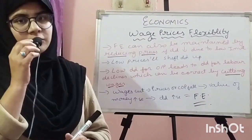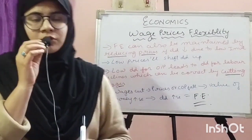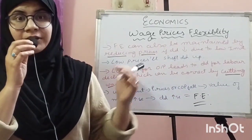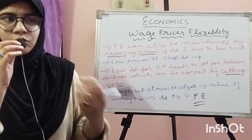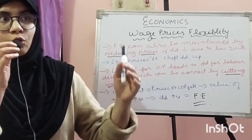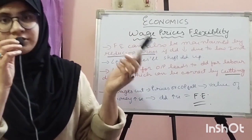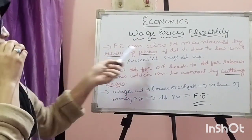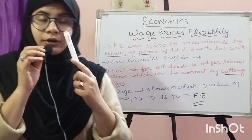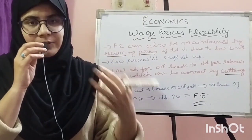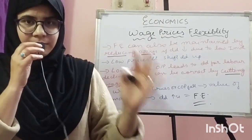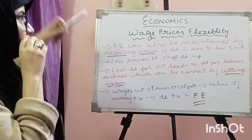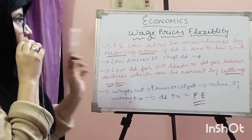Our next classical theory of employment is Wage-Price Flexibility. In the case of Say's Law, whatever production is in the economy will automatically be consumed. But if demand falls — because investment falls — the producer will immediately reduce prices. Why? Because demand and price have a negative relationship; people generally demand more at lower prices. So when demand falls due to a fall in investment, the producer will immediately reduce prices, which will shift demand up.